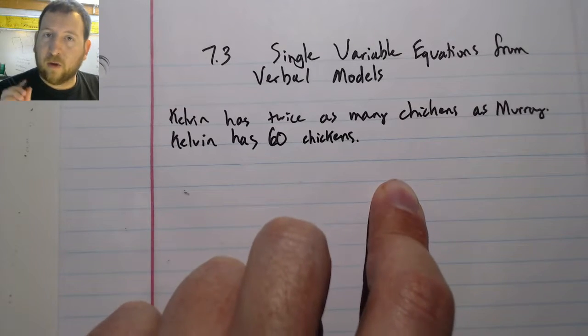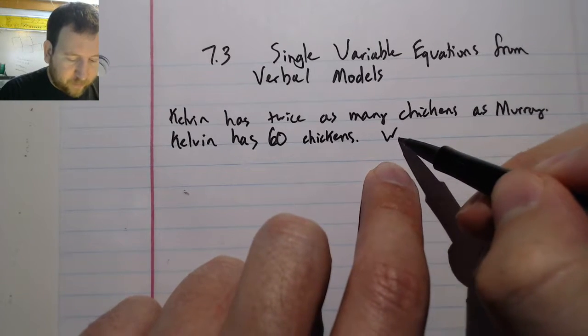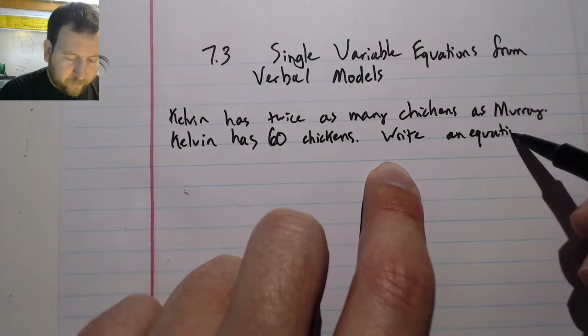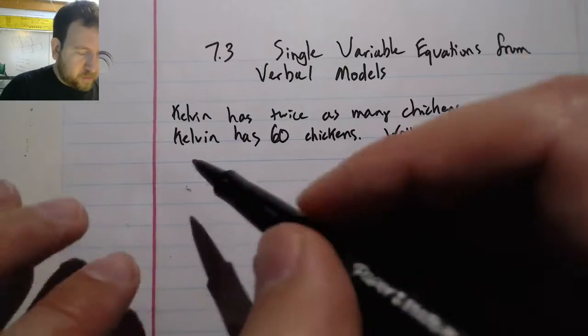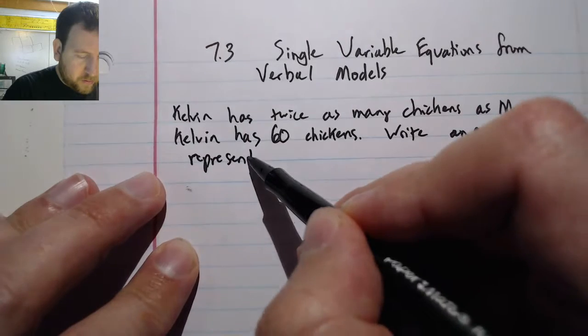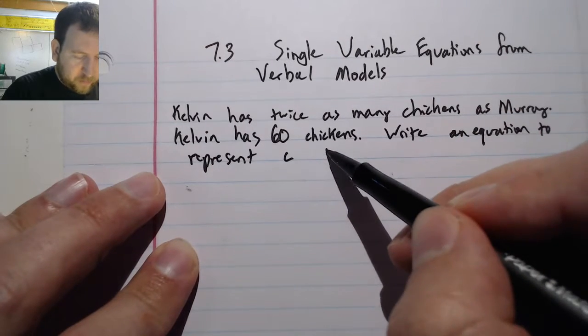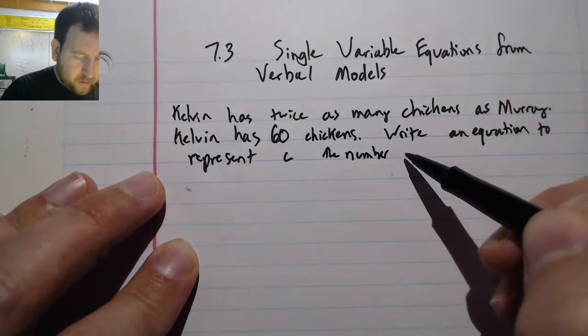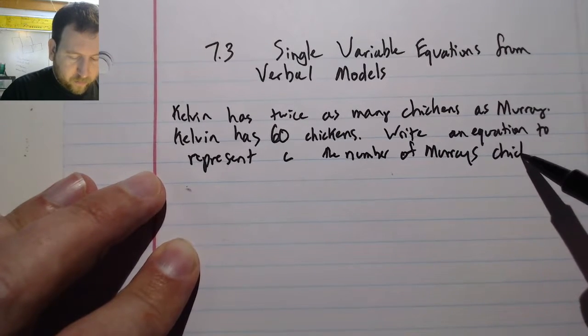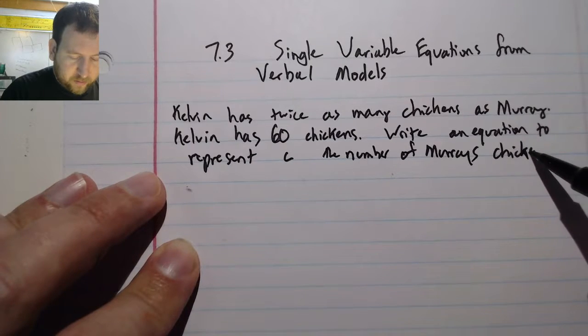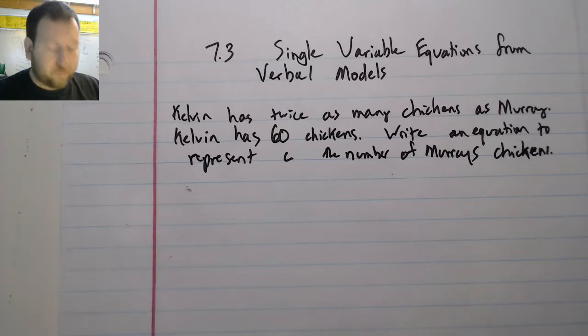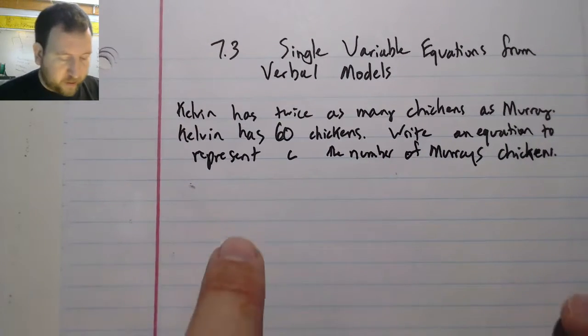Now I don't want to know how many chickens Murray has. I want to know the equation that I could write to represent C. Write an equation to represent C, the number of Murray's chickens. Alright, so for here what I'm going to be doing is I'm going to be figuring out how I can write this and set it up as an equation.